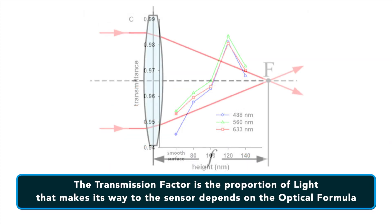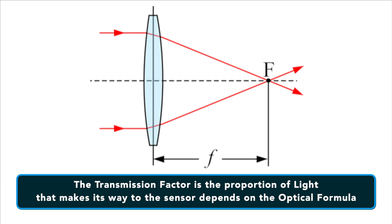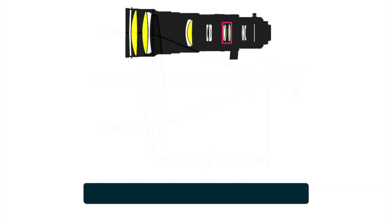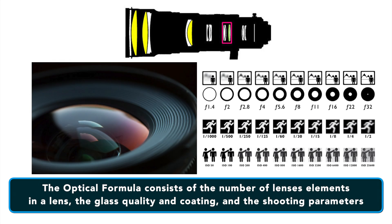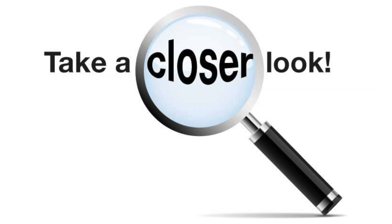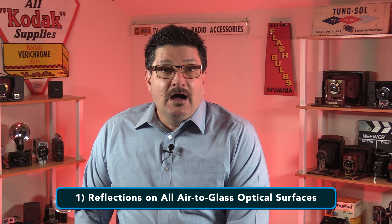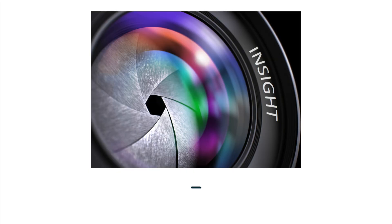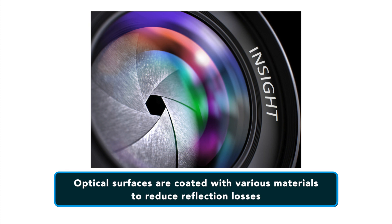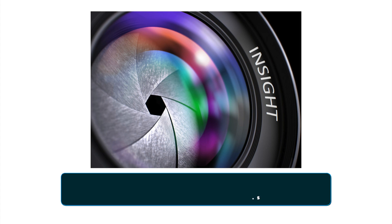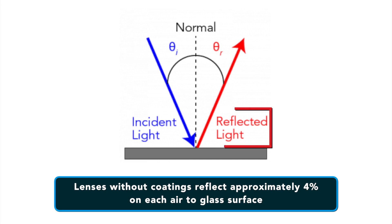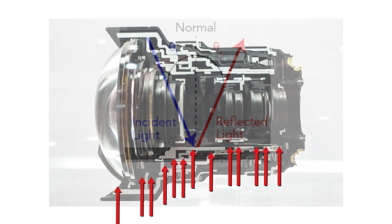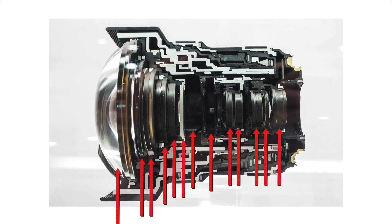The transmission factor — the proportion of light that actually makes its way to the sensor — depends upon the optical formula, which consists of the number of lens elements in a lens, the glass quality and coating, and to a lesser degree on the shooting parameters. Light loss comes from three main sources. Number one is reflections on air-to-glass optical surfaces. Each lens without coatings of any kind reflects approximately 4% on each air-to-glass surface, for every single element inside the lens.